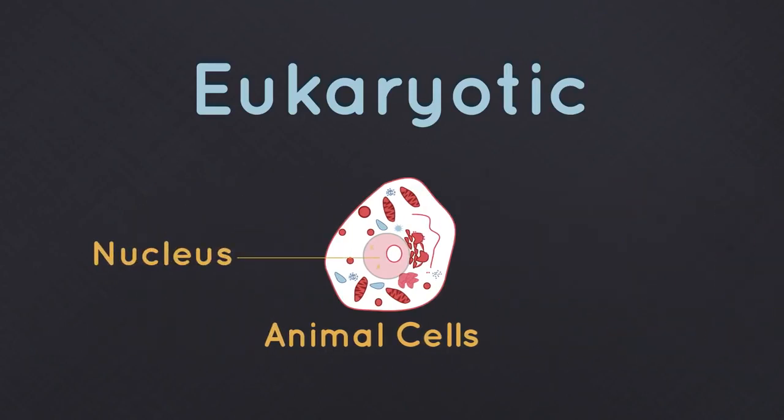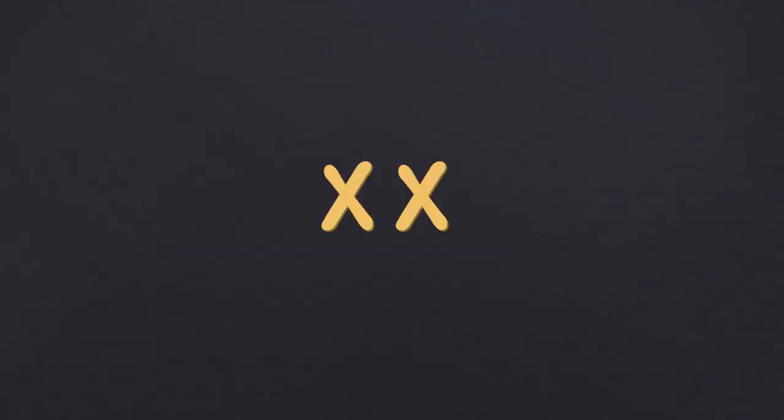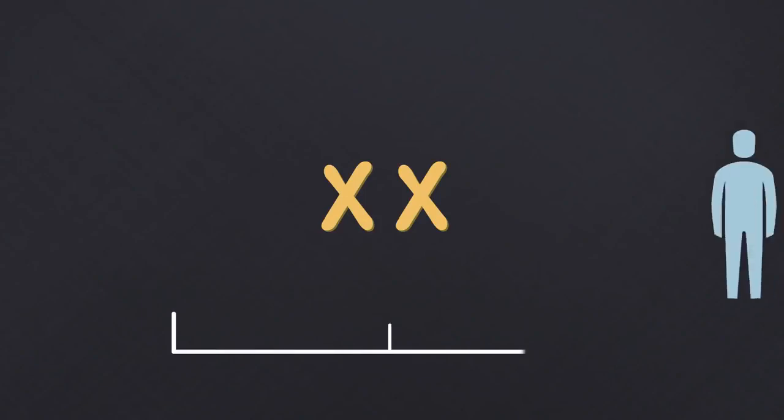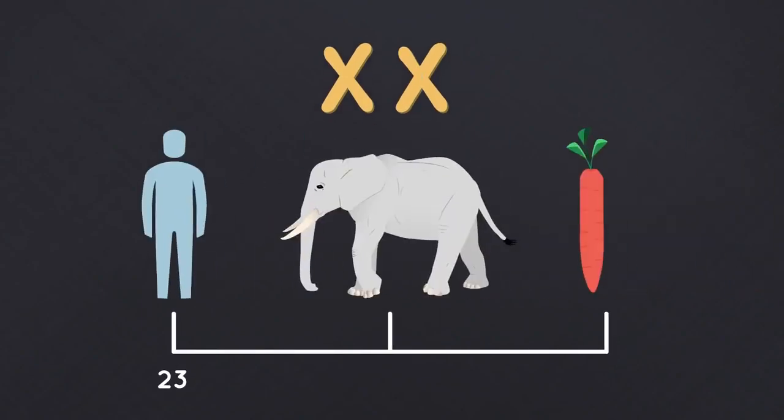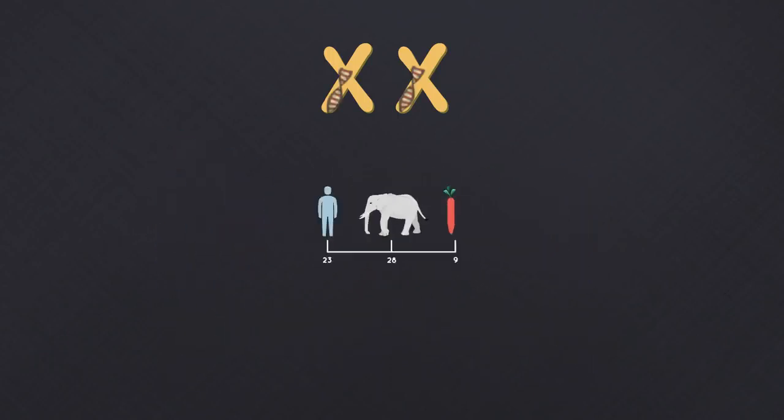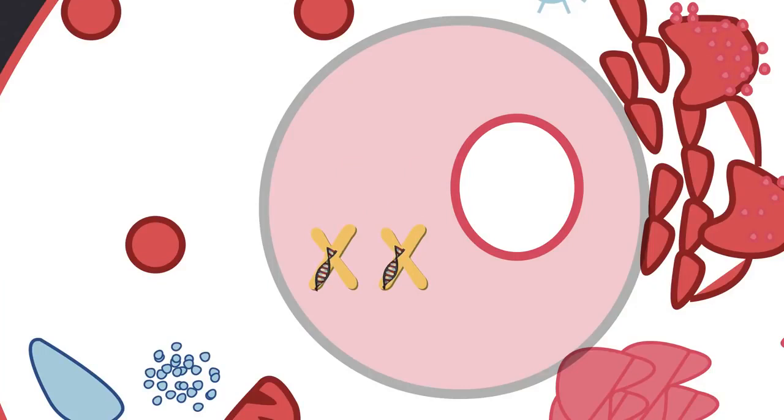Within most nuclei there are X-shaped chromosomes. Chromosomes occur in pairs but the number of chromosomes changes depending upon the species. Humans have 23 pairs, elephants have 28 pairs and carrots have 9 pairs. DNA is found within these chromosomes.